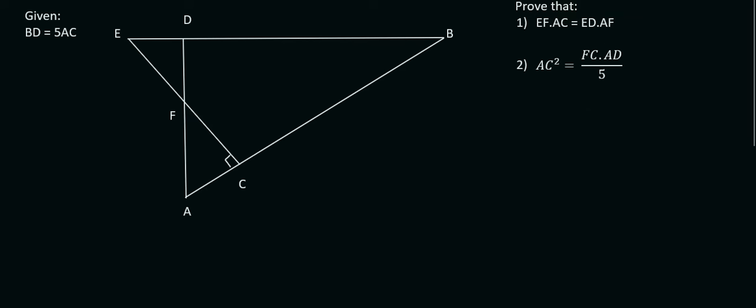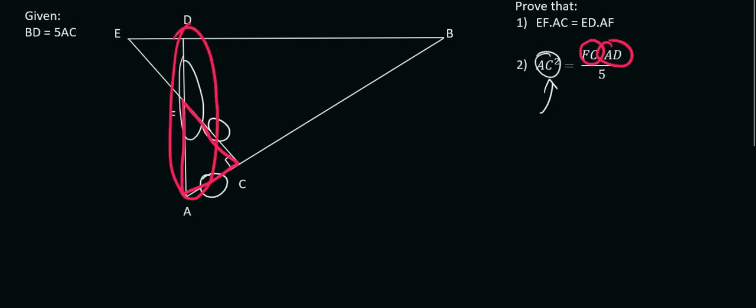Moving on to question two — here they have AC squared. I'm going to circle AC for now. FC, which is over here. And AD, which is this whole length. So we need to investigate what triangles they are asking us to work in. Typically when there's a square, it means there are two triangles that both have AC. In this question though, AC can only be a part of this triangle — there's no way that AC is part of any of the other triangles. So we know that the pink triangle is the first one.